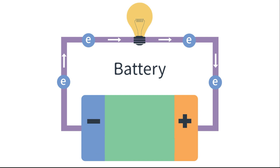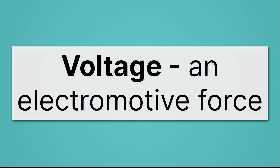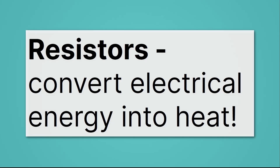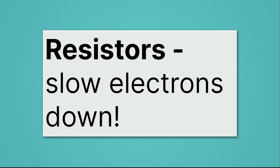Voltage is an electromotive force. We can provide it with batteries or with a plug in the wall, and it can do all sorts of work — for example, it can toast your bread. You use electricity to toast your bread. Specifically, you use what's called a resistor, which converts electrical energy into heat. Resistors convert electrical energy into heat by slowing electrons down. The electrons get moving from your battery, the resistor slows them down, and that friction creates heat.